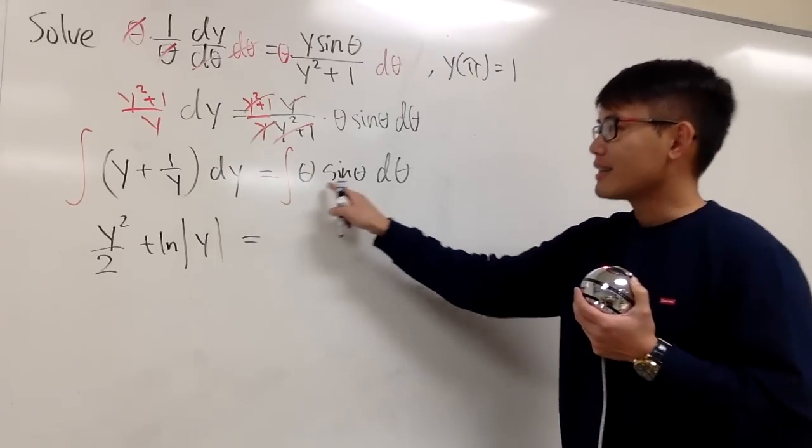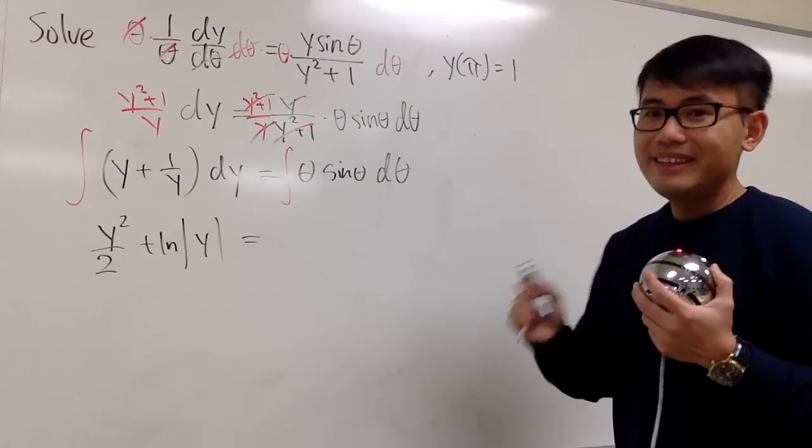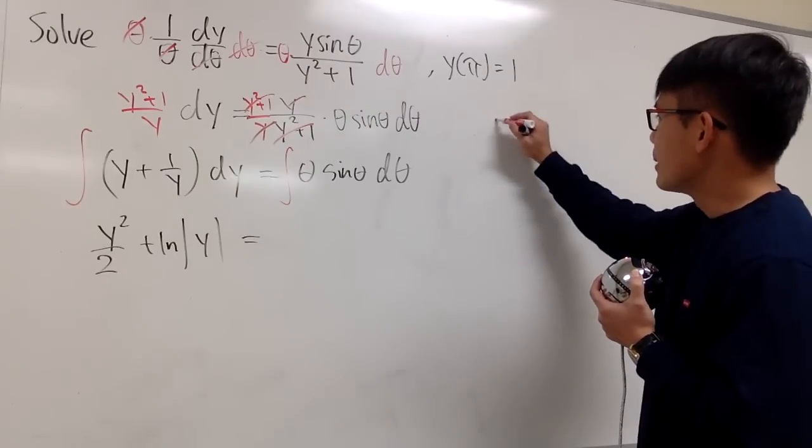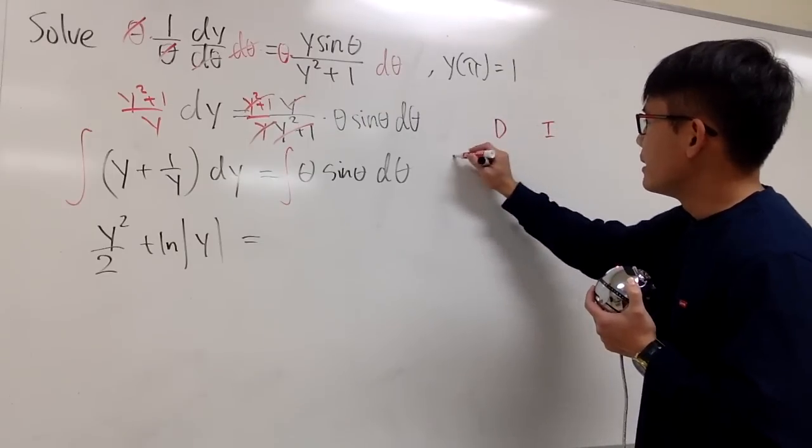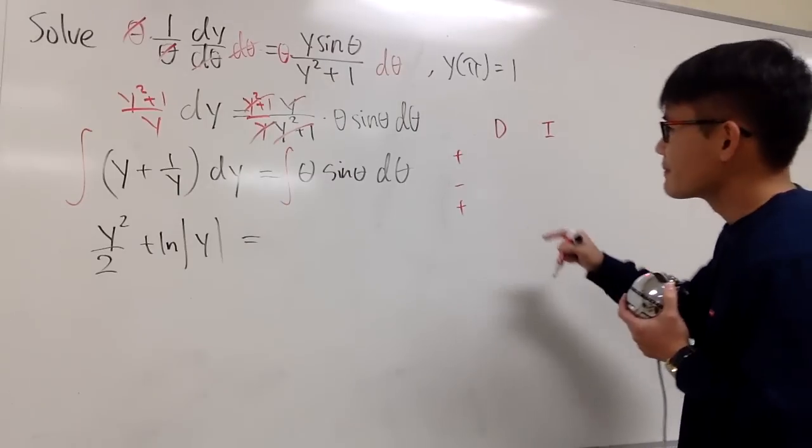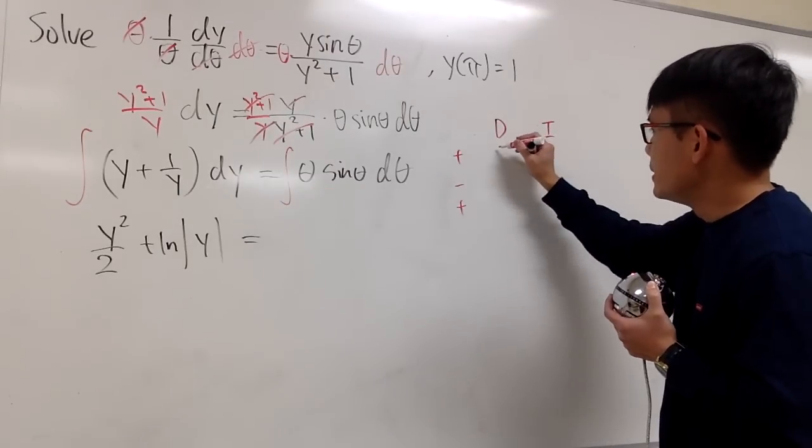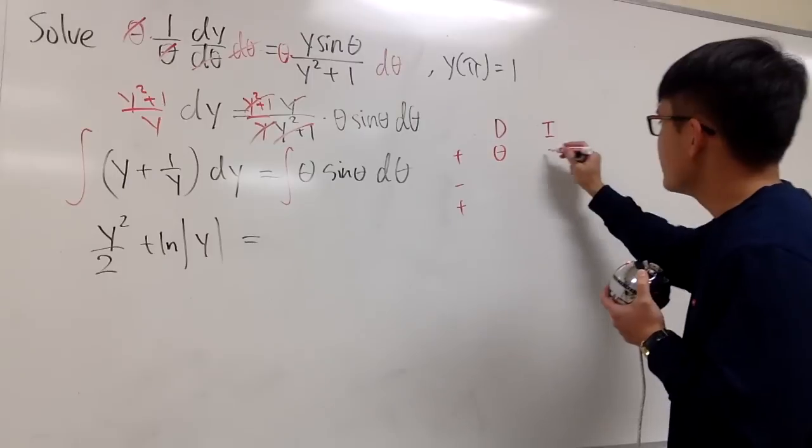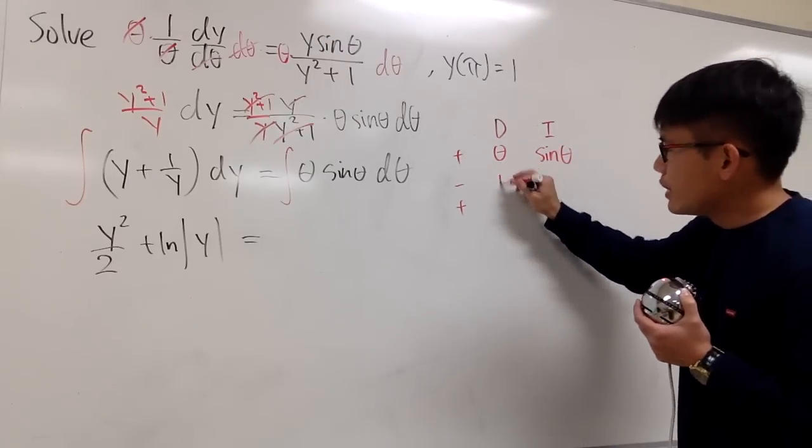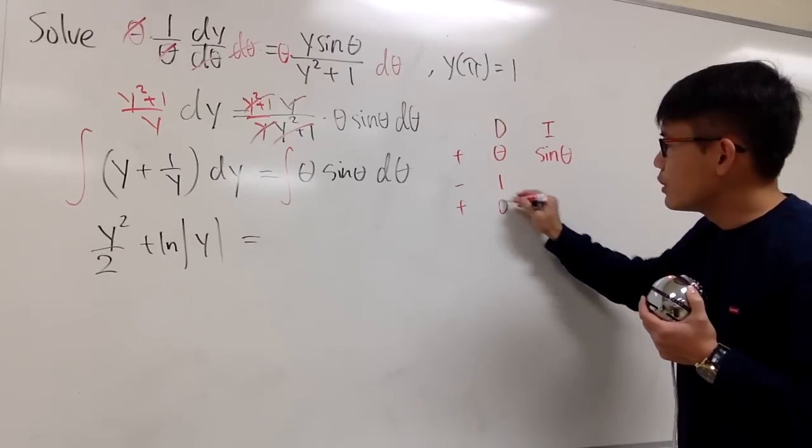Integration by parts. And let's do that real quick with the DI method right here. So I put down D and I, and then plus, minus, plus. Three rows is enough. Let me put down theta right here to be differentiated, and let me integrate sine theta. Differentiating theta one time, we get 1. And then do it again, we get 0. So we stop.